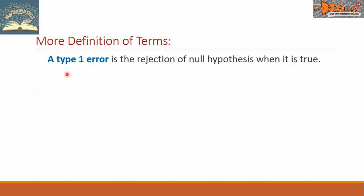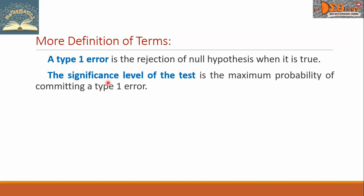Let us have more definition of terms. A type 1 error is the rejection of Null Hypothesis when it is true. The significance level of the test is the maximum probability of committing a type 1 error. This probability is symbolized by alpha.